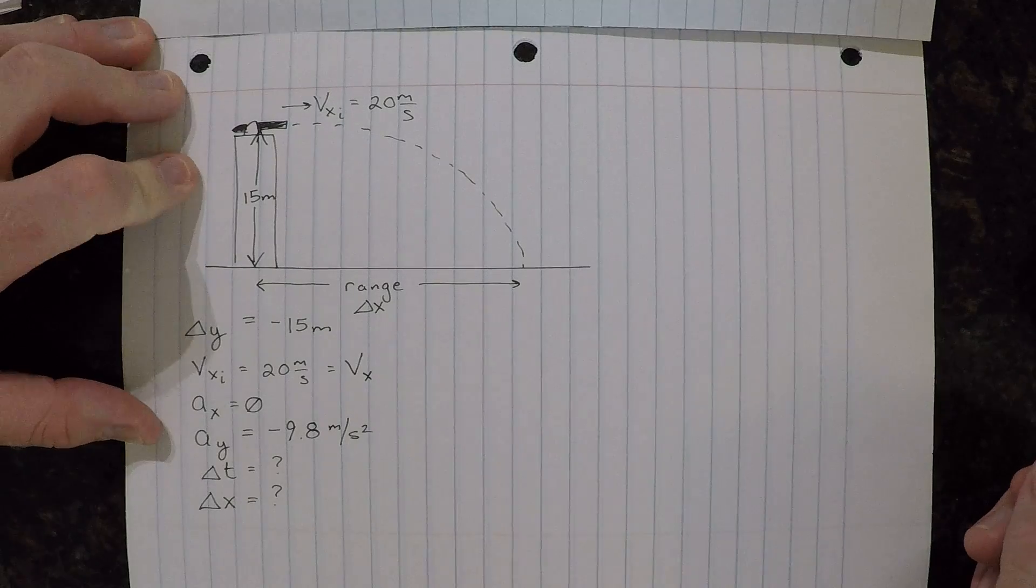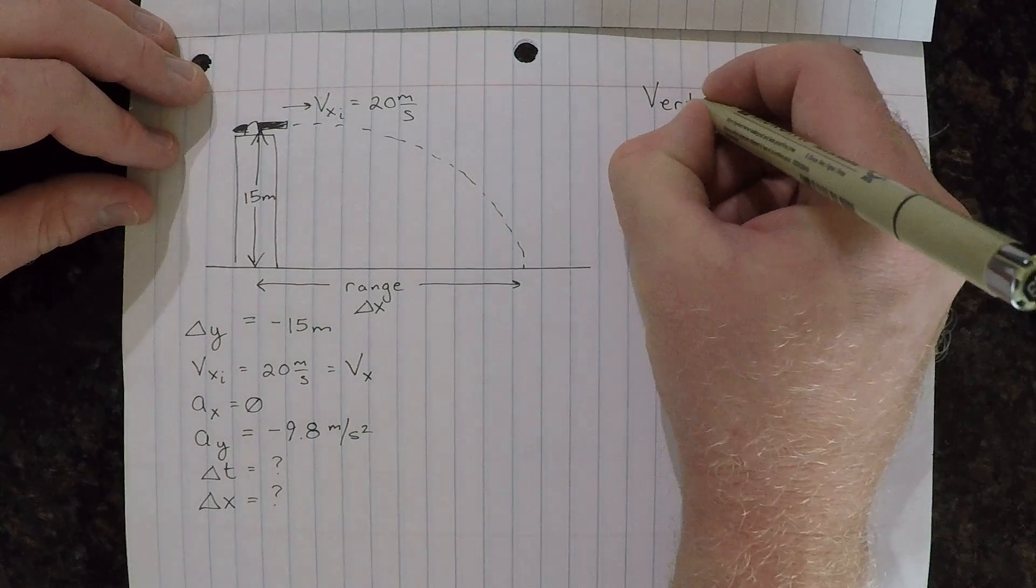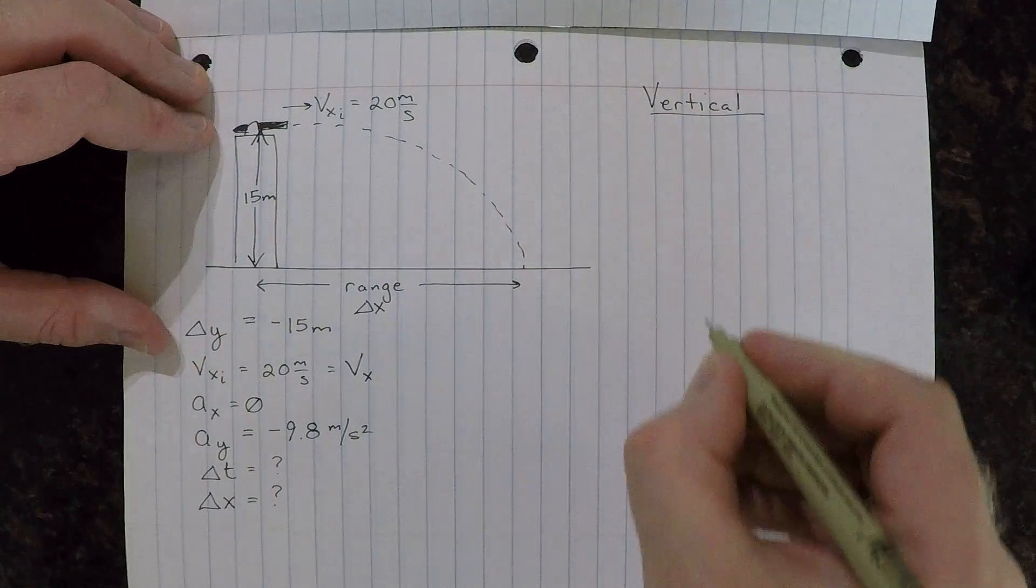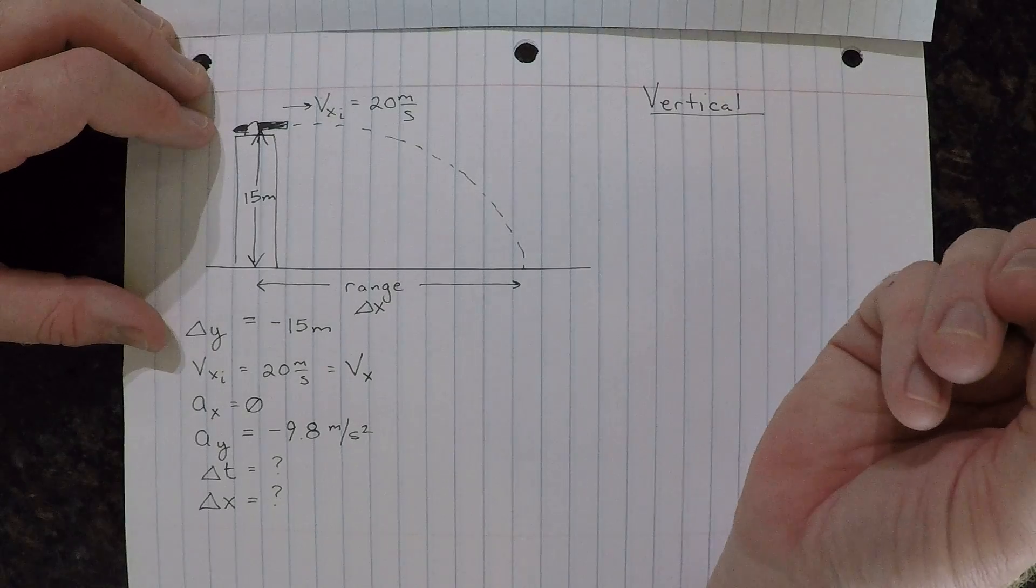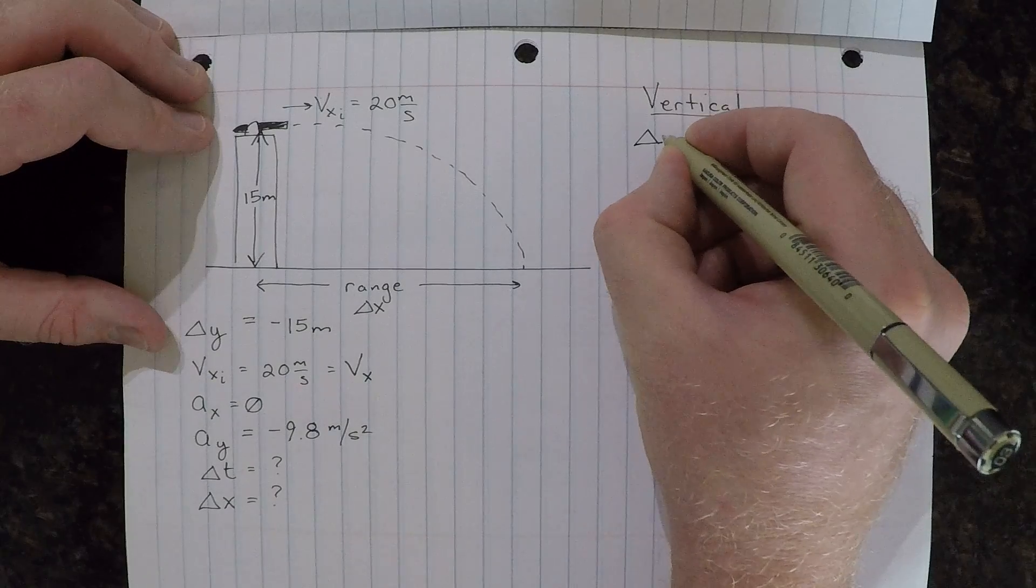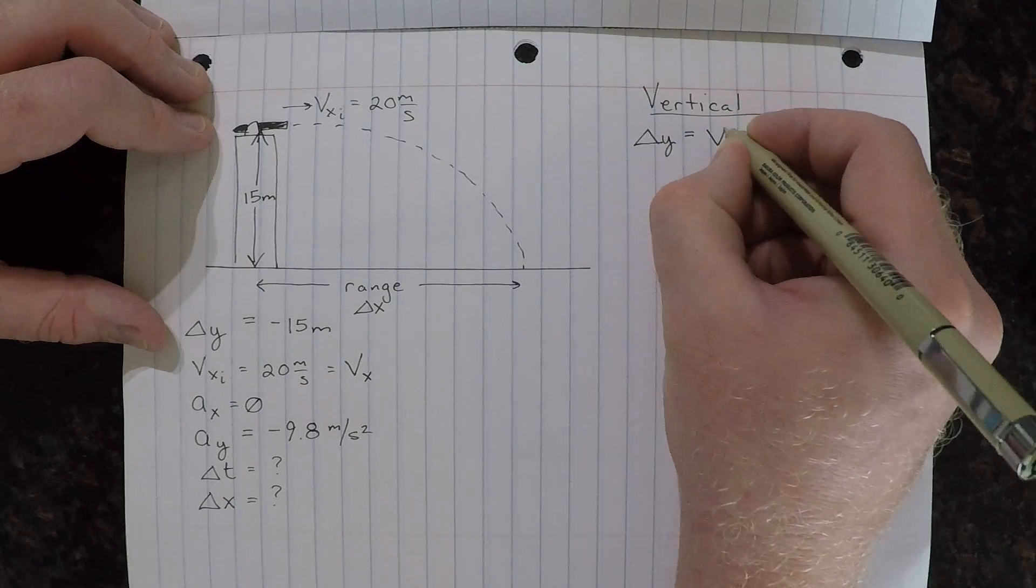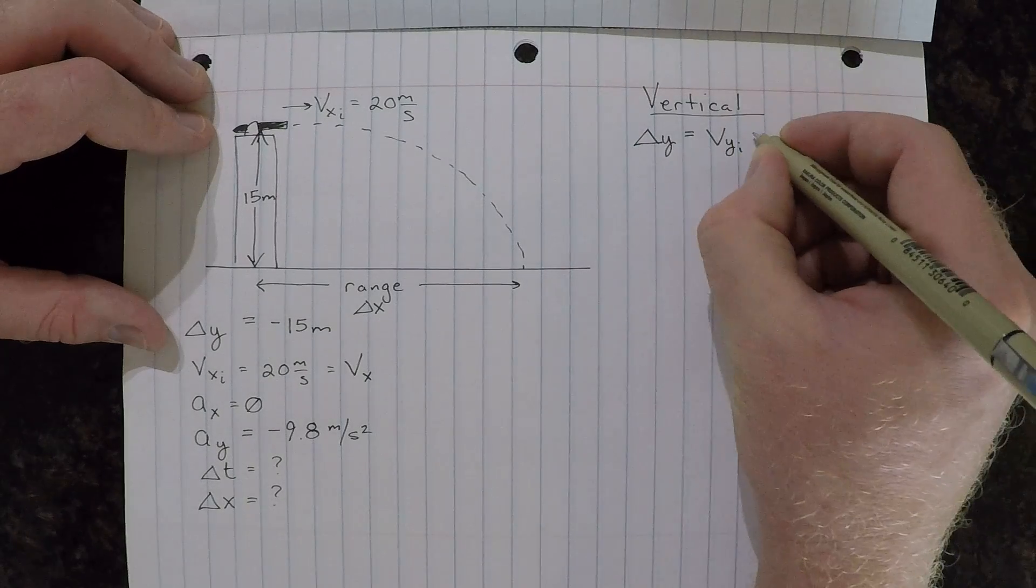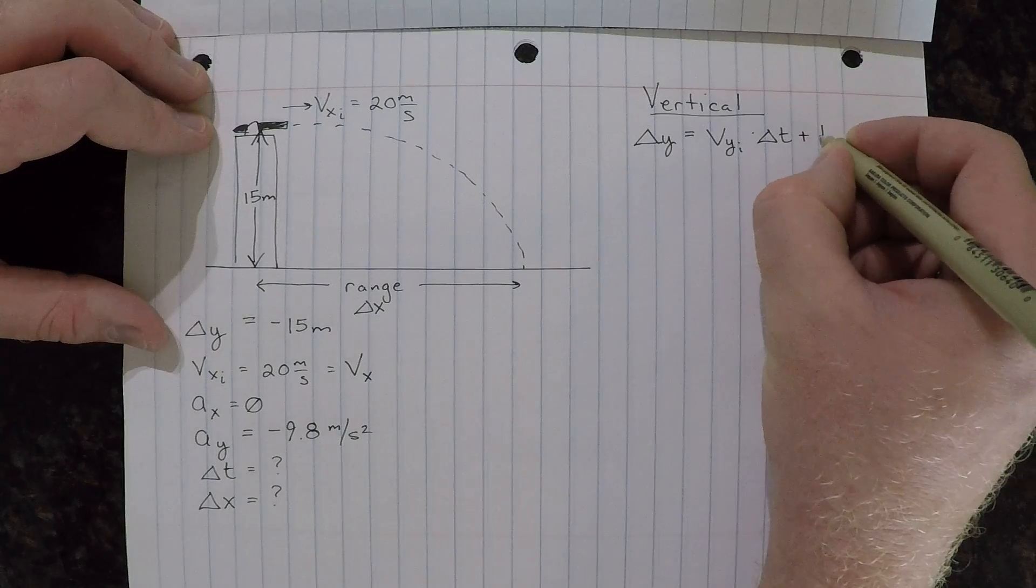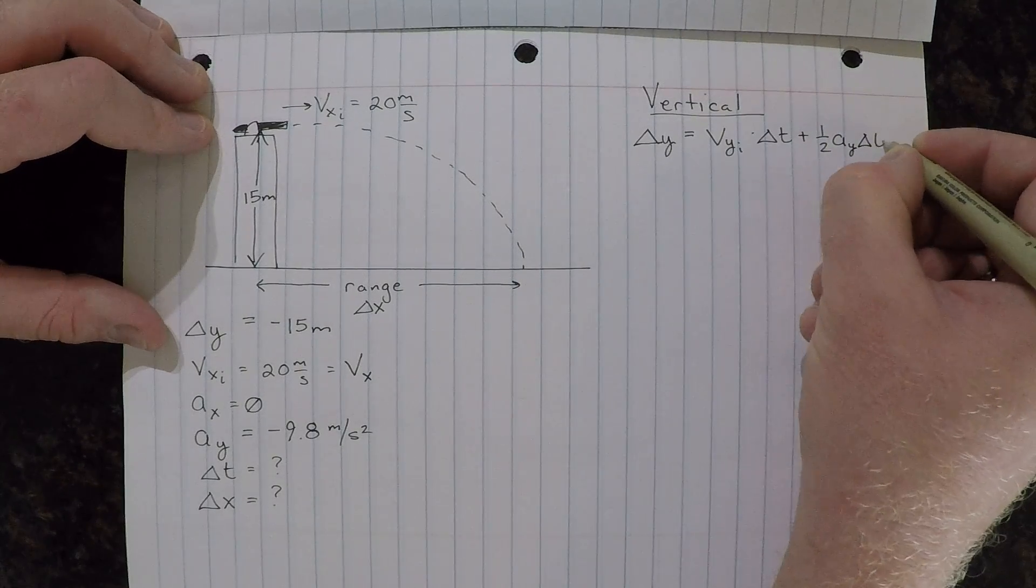So let's treat each direction separately. First is the vertical direction. So the vertical direction, we can write down our equation of motion for displacement, and let's do it for the y-direction, so delta y, and that's equal to our initial velocity in the y-direction times delta t plus one-half acceleration in the y-direction delta t squared.